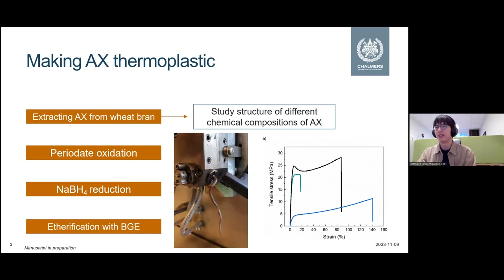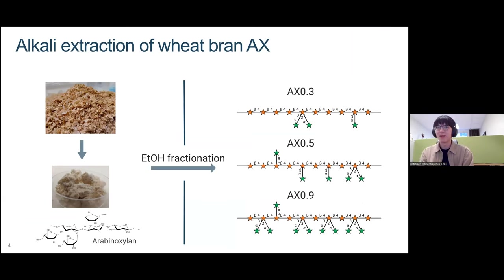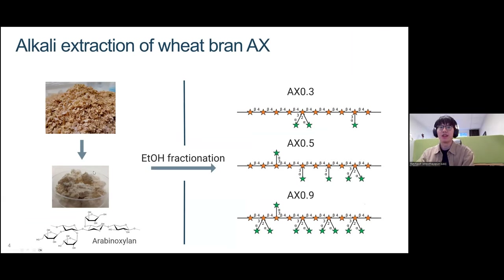In the first part of the talk, I will discuss how different arabinoxylan starting materials can be studied using X-ray scattering. We use alkali extraction to extract arabinoxylan from wheat bran, which gives us most of the available arabinoxylan. From this mixture, since each arabinoxylan has quite different solubility in water depending on chemical composition, by fractionating with different amounts of ethanol, you can obtain different fractions that are quite well separated by their arabinoxylan content.